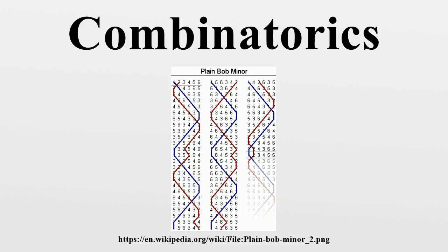Combinatorics on words deals with formal languages. It arose independently within several branches of mathematics, including number theory, group theory, and probability. It has applications to enumerative combinatorics, fractal analysis, theoretical computer science, automata theory, and linguistics. While many applications are new, the classical Chomsky–Schützenberger hierarchy of classes of formal grammars is perhaps the best-known result in the field.